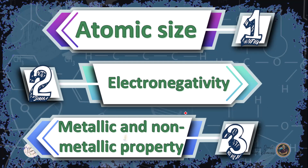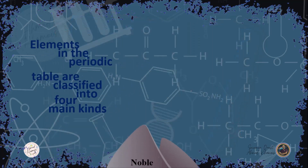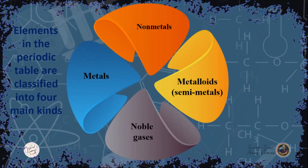Now we discuss metallic and non-metallic properties. Elements in the periodic table are classified into four main kinds: metals, non-metals, metalloids, and noble gases.